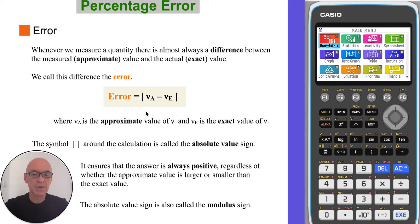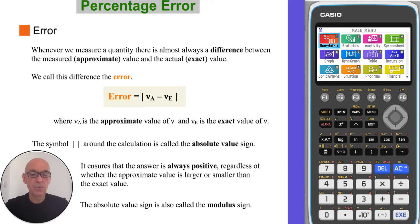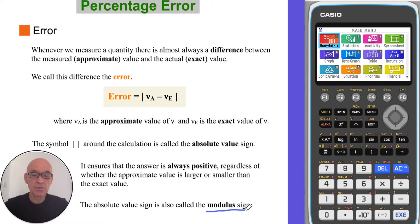To calculate this error we subtract the exact value VE from the approximate value VA. The two straight lines on either side of the calculation are called the absolute value sign, and it ensures that the answer is always positive regardless of whether the approximate value is larger or smaller than the exact value. The absolute value sign is also called the modulus sign.